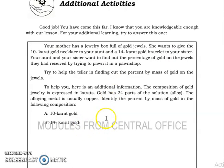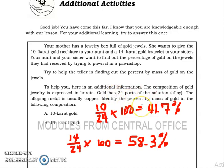For the additional activities, this is very easy. For you to identify the percent by mass of each gold. 10 carat gold, that means 10 grams of gold, so 10 divided by 24. For this time, you are knowledgeable enough for our lesson. For your additional learning, you have to solve for this.